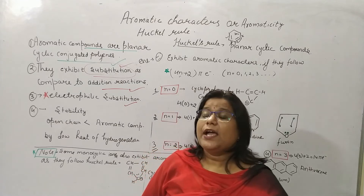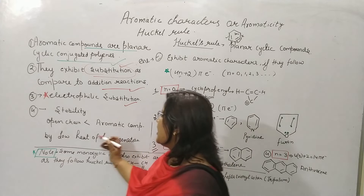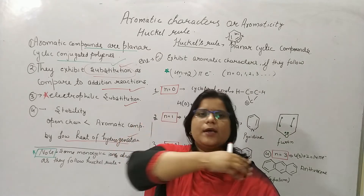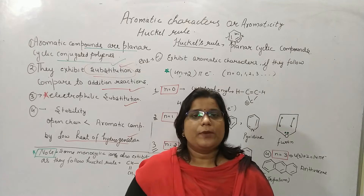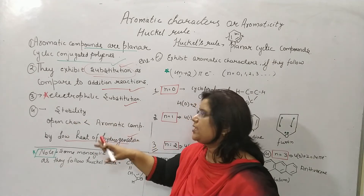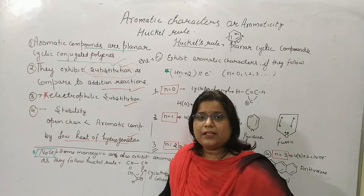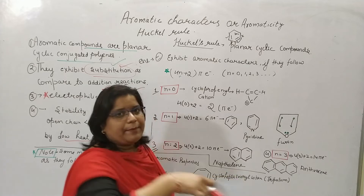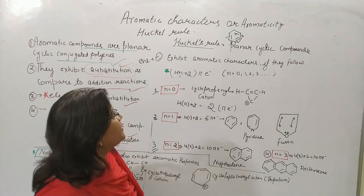The stability of aromatic compounds is greater than that of general unsaturated compounds. As discussed in resonance, they have a low heat of hydrogenation — the gap is around 36 kilocalories per mole. This stability comes from the delocalization of pi electrons. If you search 'resonance structure MS Science Academy' on YouTube, you can find that lecture.